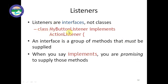Here we have the class declaration: 'class MyButton implements ActionListener'. ActionListener is the interface required when doing button events. An interface is a group of methods that must be supplied — inside an interface we define the prototype of different functions used in derived classes. When you say 'implements', you are promising to supply those methods defined inside the interface to the derived class.